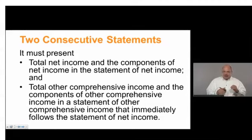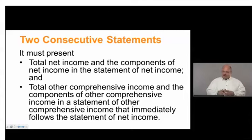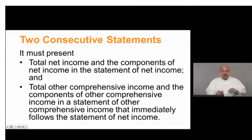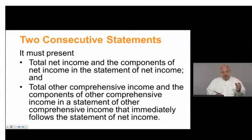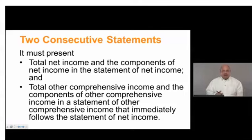The statement of comprehensive income begins with net income. The difference between the two presentation formats is whether we're sticking a heading in the middle. With two consecutive statements, there's the statement of net income, then net income, and then the statement of comprehensive income starts with net income. Or if it's one long statement, that's the statement of comprehensive income with net income in the middle, but not highlighted by breaking into two statements.